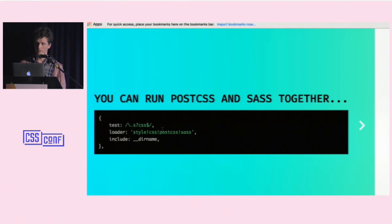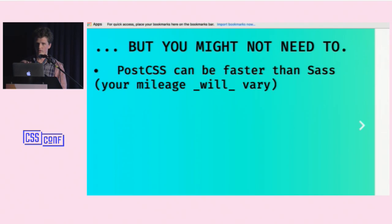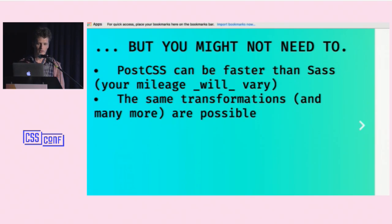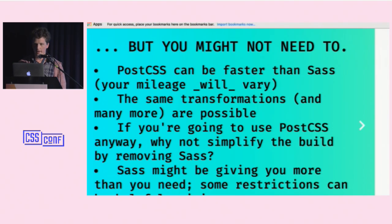You can chain the loaders in webpack if you want to, but you might not need to. PostCSS can be faster than Sass — your mileage will vary depending on the string size and nature of transformations, but you may find it significantly faster. PostCSS also offers the same transformations as Sass plus many more, because it has a plugin-based architecture where you can write any transformation you want. This raises the question: if you're already using PostCSS for autoprefixer, why not simplify your build by removing Sass altogether?